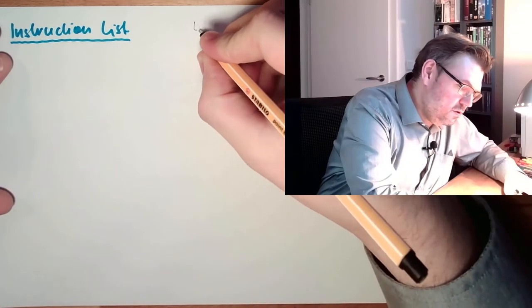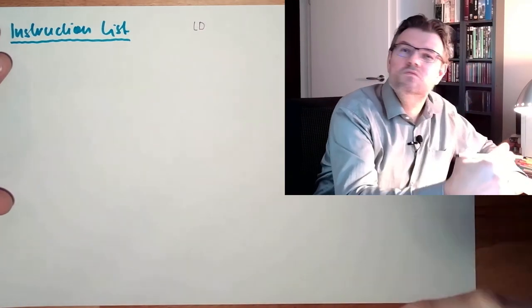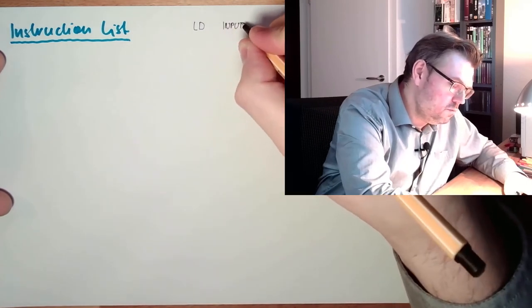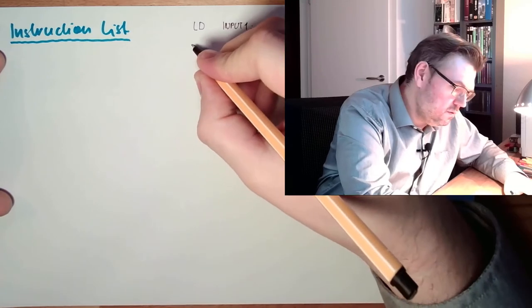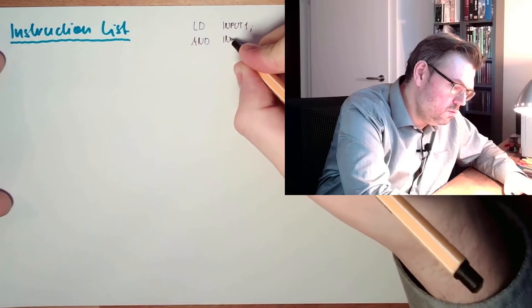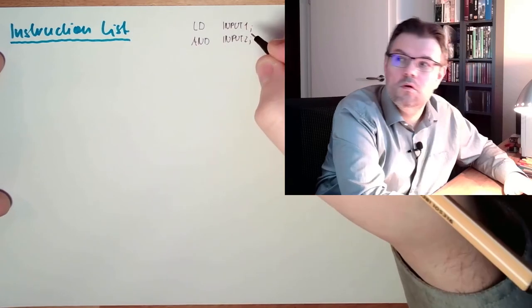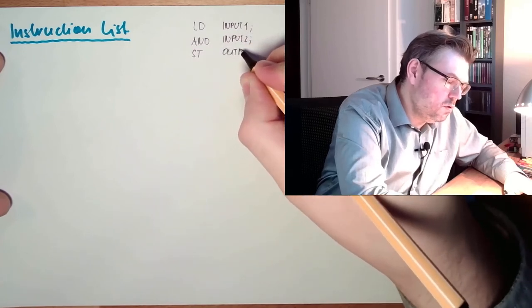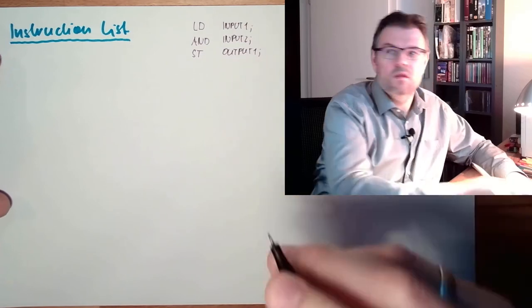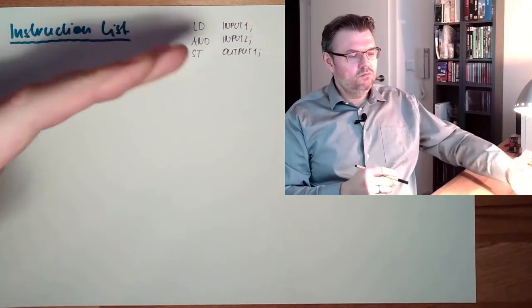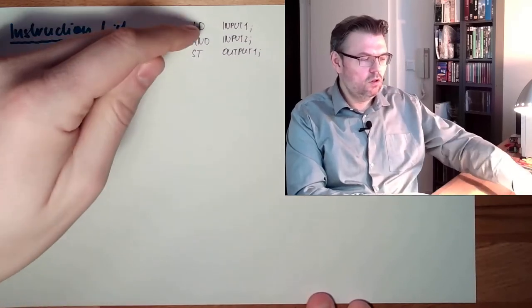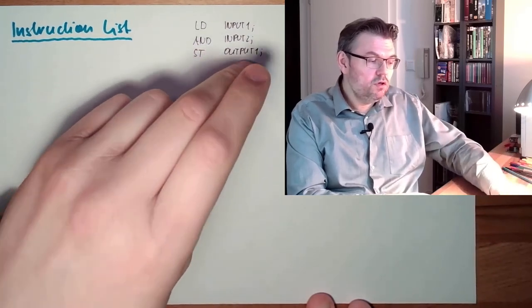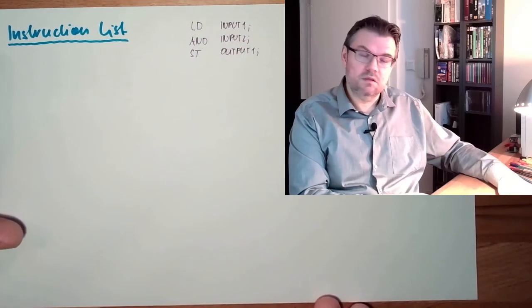That's it with Instruction List, very basic. Like a code would look like, for instance: LD - this is a command on one certain PLC type - input one, AND input two. Okay, SD for set output. This would be the command after I told you: load input one, make an AND with input two, and set or reset the output one to the result. The result is not even visible, so it's hard to read, hard to maintain, but usually very compact code.